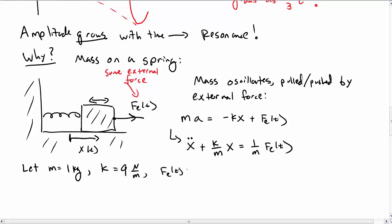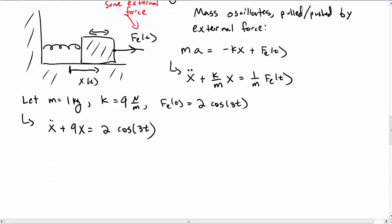Let's choose some values: 1 kilogram for the mass, 9 newtons per meter for k, and the external force to be this particular combination. So then I get the differential equation that we actually started the video with. We get this differential equation which now describes some mass oscillating back and forth.